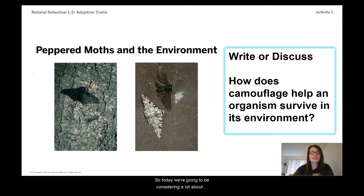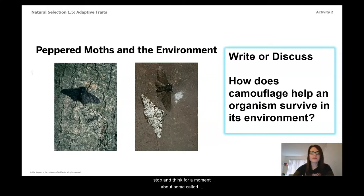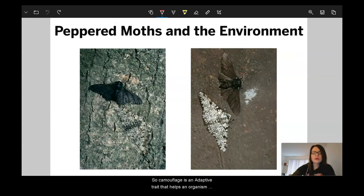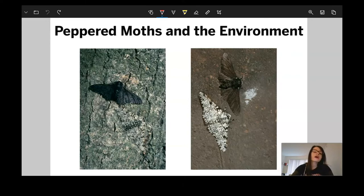Today we're going to be considering adaptive traits and the impact of the environment. But let's first stop and think for a moment about camouflage and how it can help an organism survive in its environment. Camouflage is an adaptive trait that helps an organism survive by hiding and blending into its background. A really common example in biology is a peppered moth.